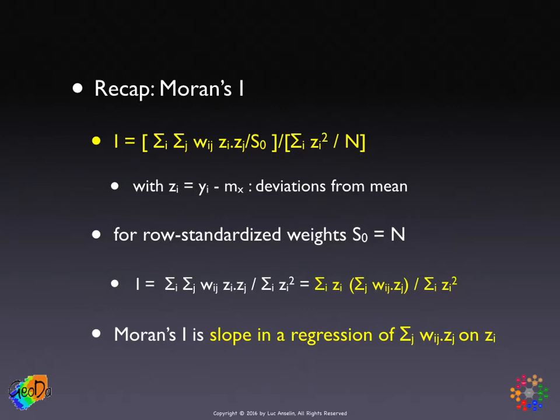So we end up with a much simpler expression, which is, in the numerator, the double sum of the cross-products times the weights, and in the denominator, since z is in deviations from the mean, the sum of squared deviations from the mean.